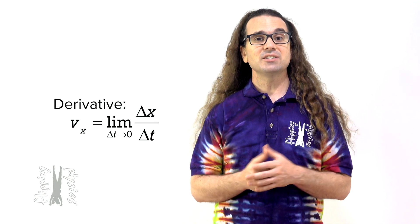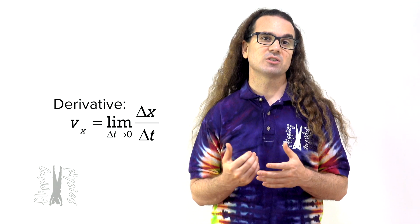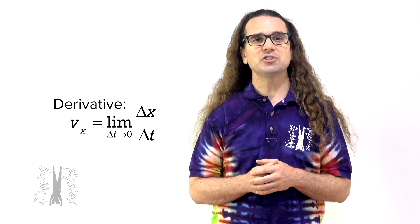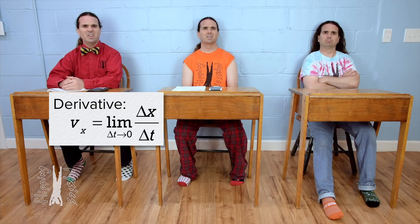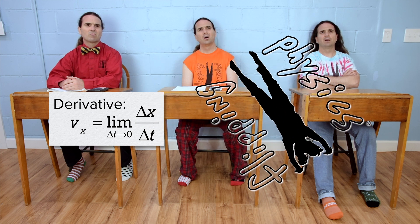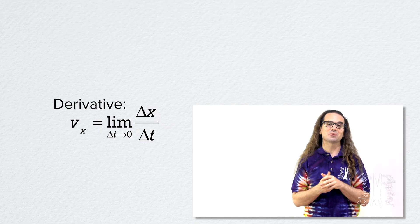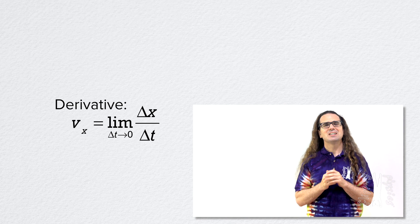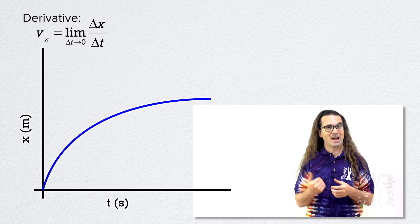Good morning. One example of a derivative looks like this: the velocity of an object in the x-direction equals the limit of the displacement of the object divided by change in time as the change in time approaches zero. That is usually how students respond. So let's take a detailed look at what this means, starting with this graph.